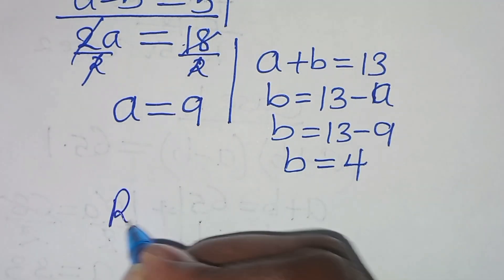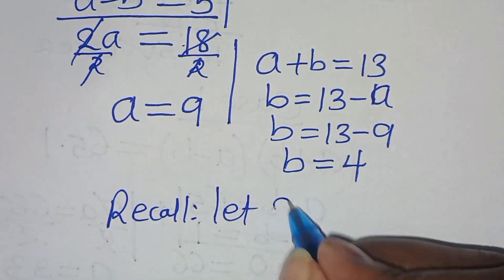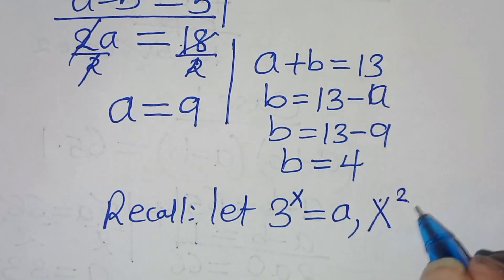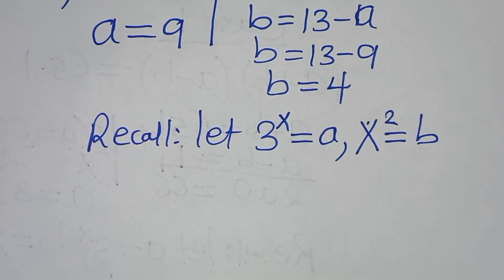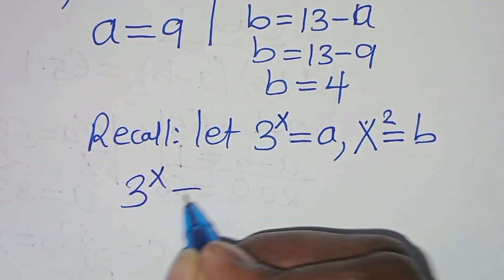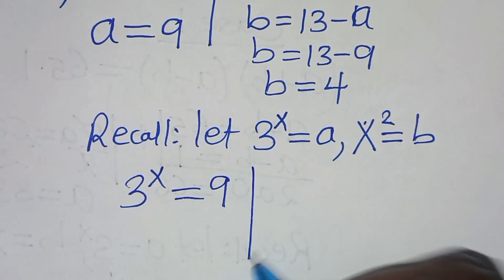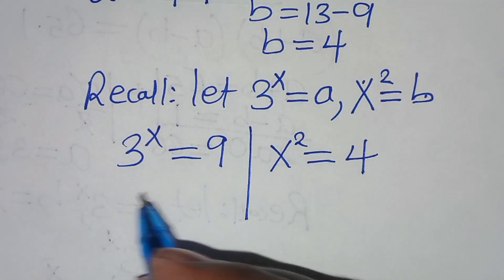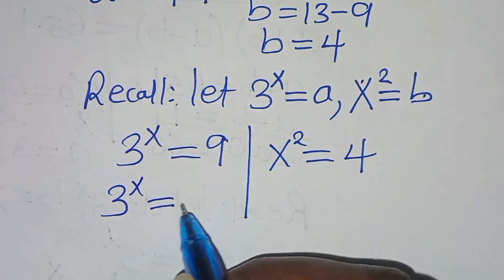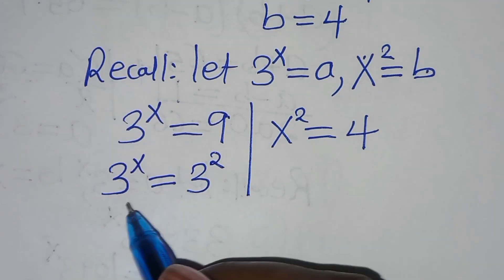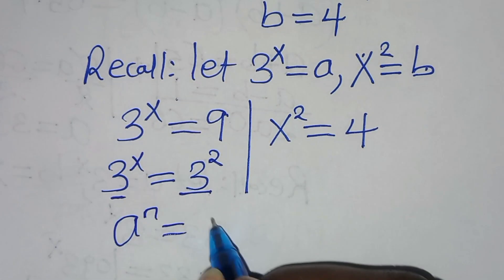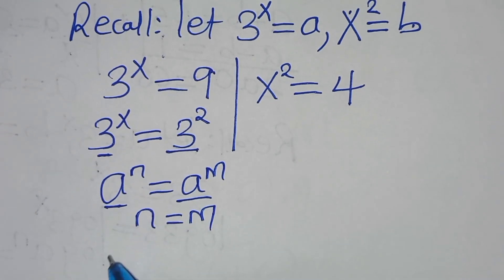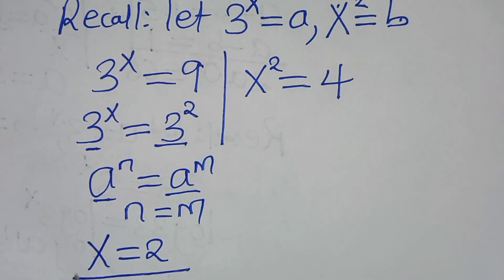Now, recalling from here, we have that 3 to the power of x equals a, and x to the power of 2 equals b. Substituting, we have 3 to the power of x equals a, which is equal to 9. And we have x to the power of 2 equals b, which is equal to 4. From this side, 3 to the power of x equals 9, which is 3 to the power of 2. Since the bases are common, the exponents must be equal, so this implies that x is equal to 2.